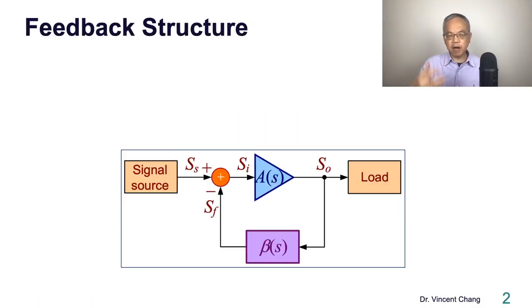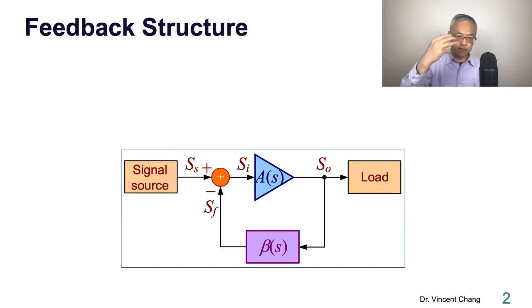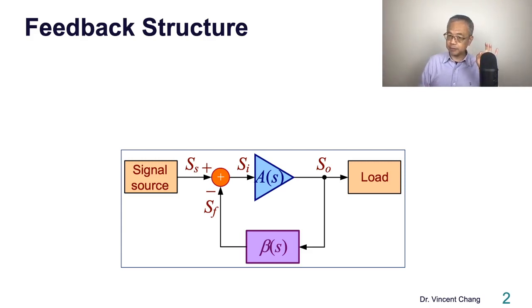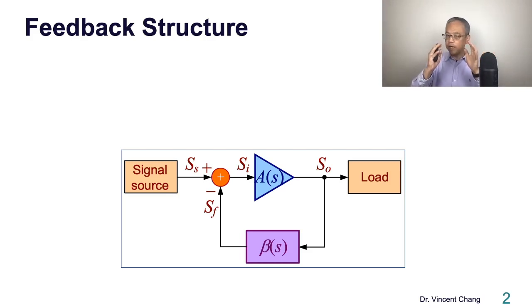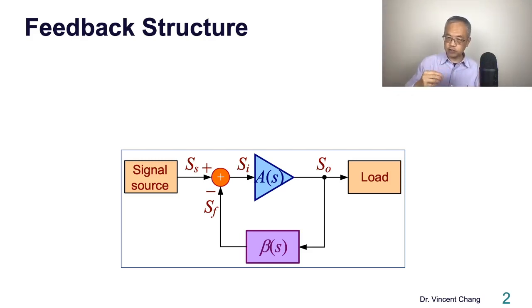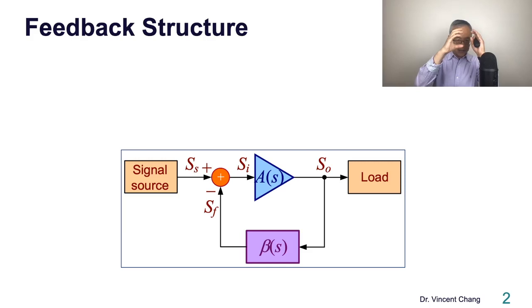Let's start with the model of a sinusoidal oscillator, which is the feedback structure. You have the signal source coming in, and then through the mixer it creates an input signal for the amplifier. The input signal SI is fed into A, the open loop transfer function. The output of the amplifier is sampled and sent back through the feedback network — the purple one — generating a feedback signal going back to the mixer at the input side.